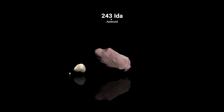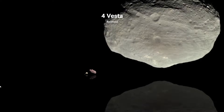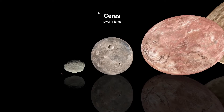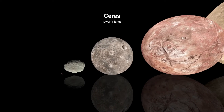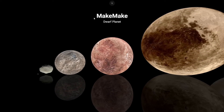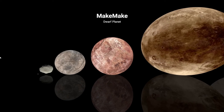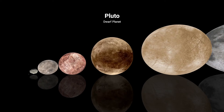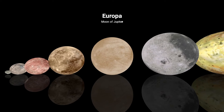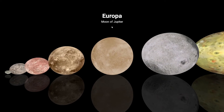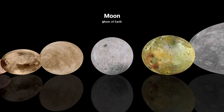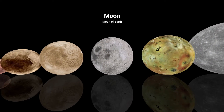Next up are the asteroids: 243 Ida, 4 Vesta, then dwarf planets — MakeMake, Pluto, also a dwarf planet. Then Europa, a moon of Jupiter, and our own Moon, a moon of Earth.